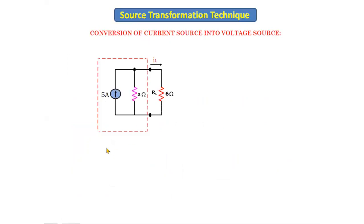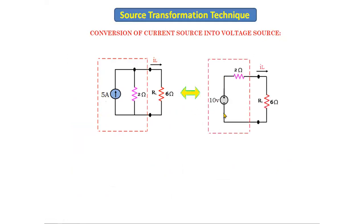This is the current source circuit — it has one resistor, and the dotted part is in the form of a practical current source. We will convert the practical current source to a practical voltage source by removing the dotted part and replacing it with the practical voltage source equivalent, keeping the remaining circuit as it is.